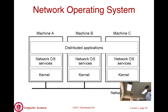Then we have what is called a network operating system, which is different from a distributed operating system. In a network OS — that is your traditional OS that you run on your desktop or laptop — the presence of other machines is visible to you. All the OS is doing is allowing you to communicate. There are network OS services which allow you to set up TCP/IP connections, SSH, and HTTP to communicate with other machines. Essentially all general purpose operating systems today are a form of network operating systems. They still allow you to run distributed applications, except that the applications need to figure out what components run where and explicitly communicate with those components.